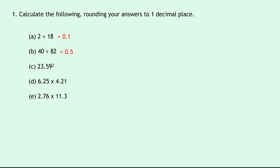Part C: 23.59 squared. If you do that in your calculator, you should get 556.4881. Rounding that to one decimal place will give us 556.5. Part D says 6.25 times 4.21. Putting that into your calculator, you should get 26.3125. Rounding that to one decimal place will give us 26.3.